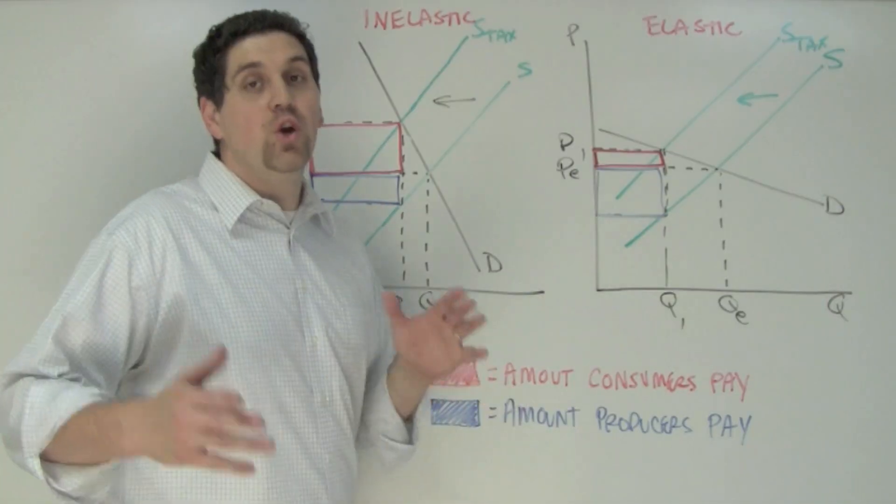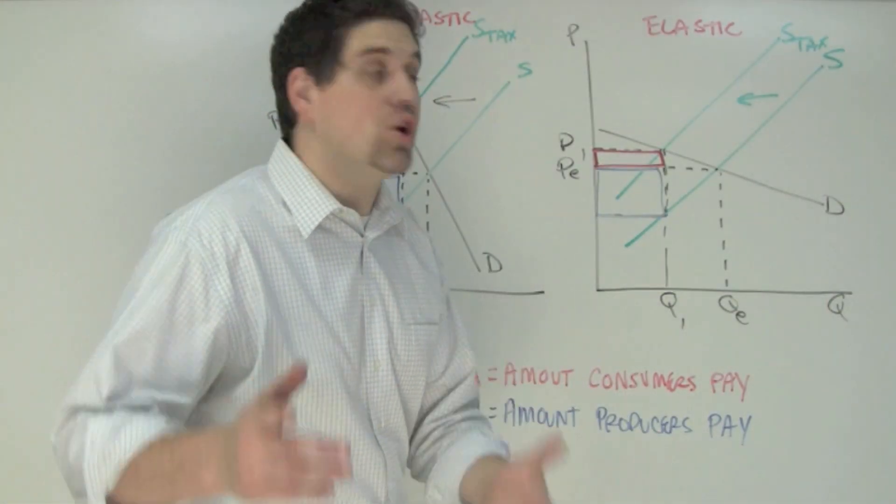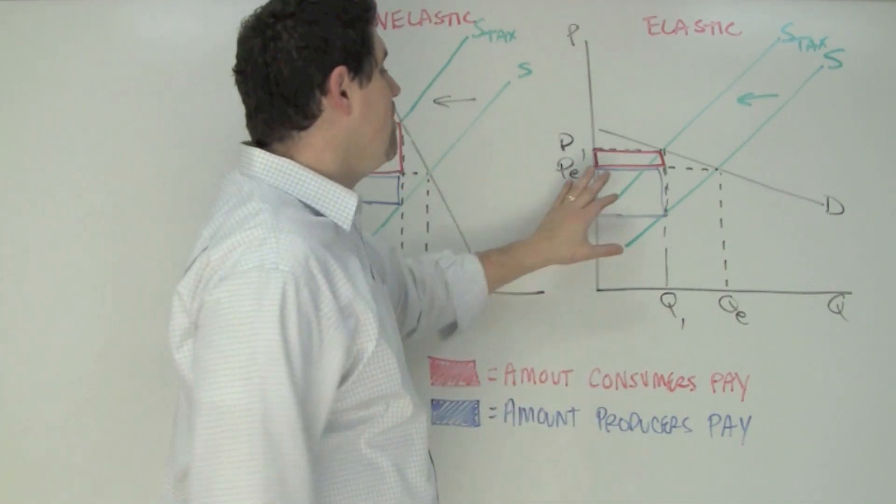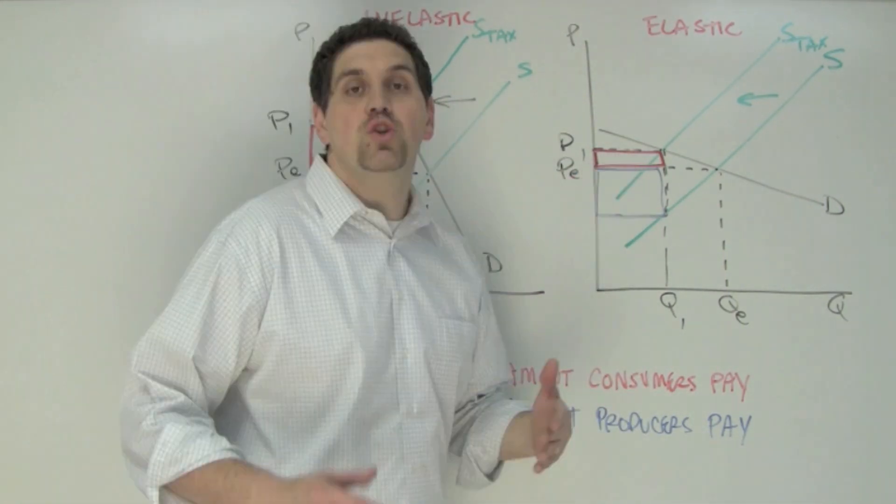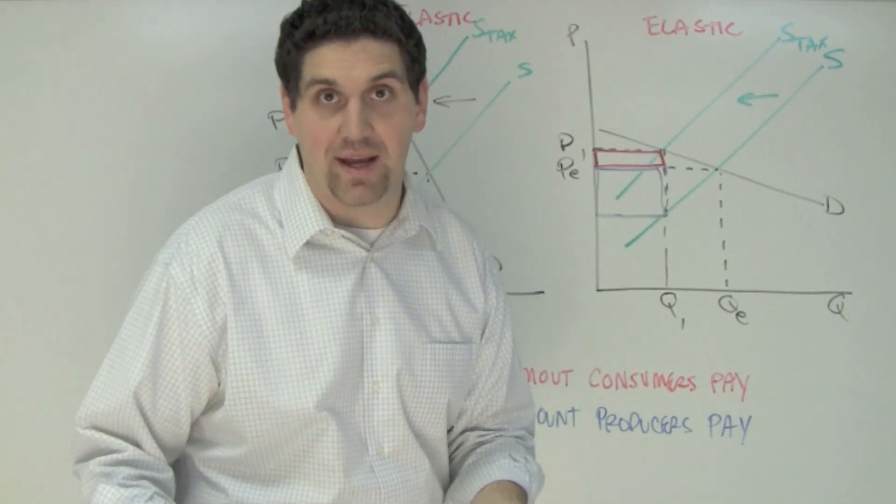You can show the same idea by changing the elasticity of supply. Now let's answer this question. Answer B is correct because the more elastic the demand curve, the more burden is on producers. So if the demand was perfectly elastic or horizontal, the producers would have to pay all the tax.